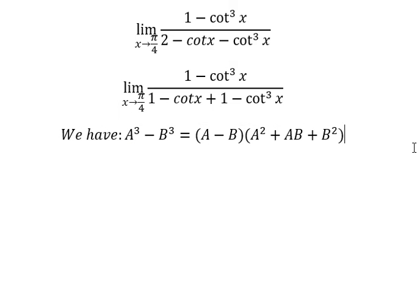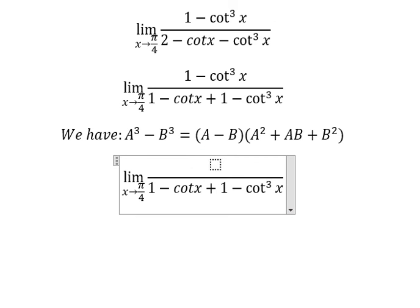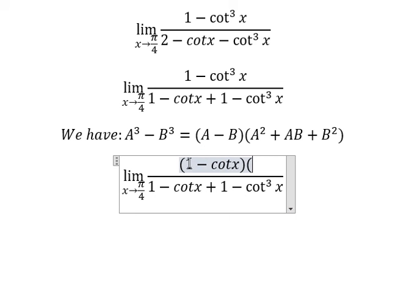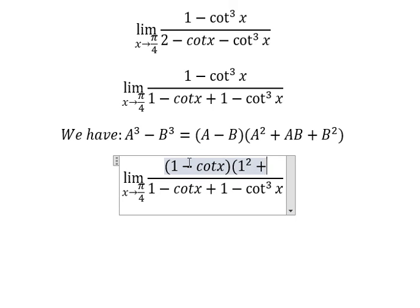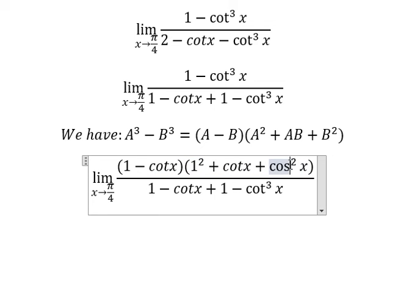So we have 1 minus cotangent x, 1 square plus 1 cotangent x plus cotangent x square. Similar for the second one.